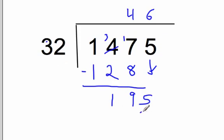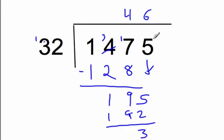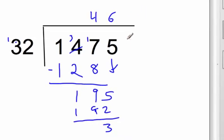6 times 2 would be 12. I'd carry that 1. 6 times 3 would be 18, plus 1 would be 19. Actually, this one works out real good. So we get pretty darn close there. 195 minus 192. We have 3 left over and nothing else to bring down over here. So I'm going to put the remainder of 3.